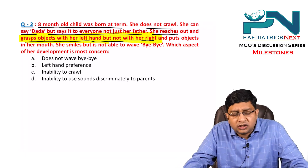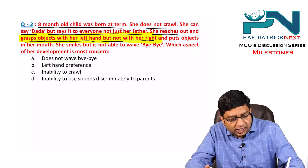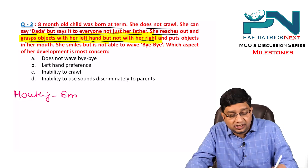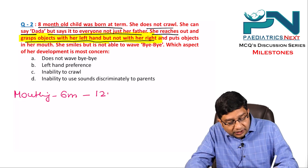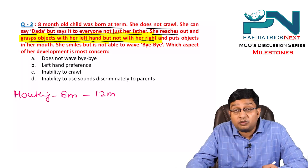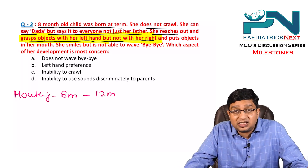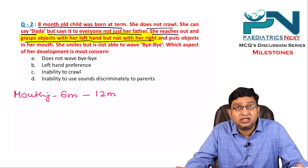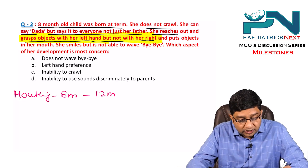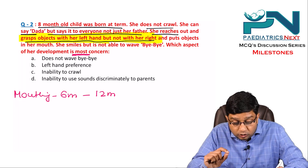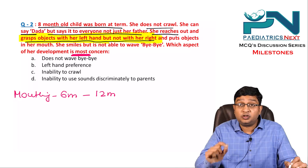She grasps with her left hand but not her right, and puts objects in her mouth. Mouthing is normal — it starts at 6 months and is usually corrected by 12 months. She smiles but cannot wave bye-bye, which is expected since bye-bye comes at 9 months and this child is 8 months. So which aspect of development is most concerning?